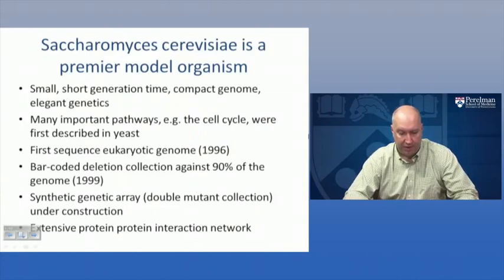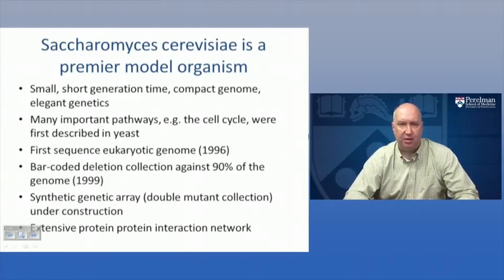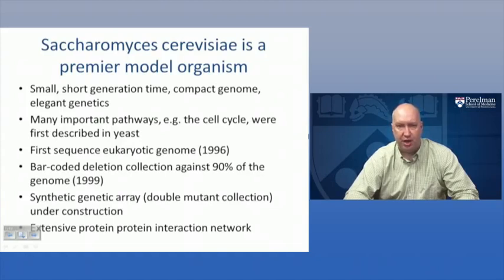Yeast are a premier model organism, not just for reverse genetics but for genetics in general. They're relatively small with a short generation time, have a compact genome and elegant genetic strategies. Many important pathways, for example the cell cycle, were first described in yeast. Yeast was the first sequenced eukaryotic organism in 1996. Shortly afterwards, the community began to develop a barcoded deletion strategy to target every gene in the yeast genome. Because of that, the resources for reverse genetics are very robust in yeast, and there's also an extensive protein-protein interaction network.